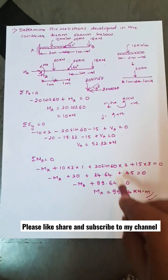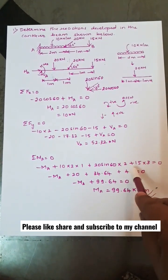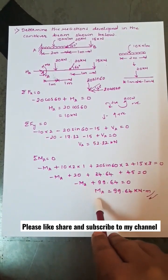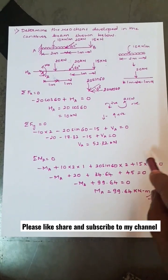Then 15 also causes a clockwise moment about A, so 15 into 3 at a distance of 3 meters. So while solving we get Ma equal to 99.64 kilonewton meter. Okay, thank you.